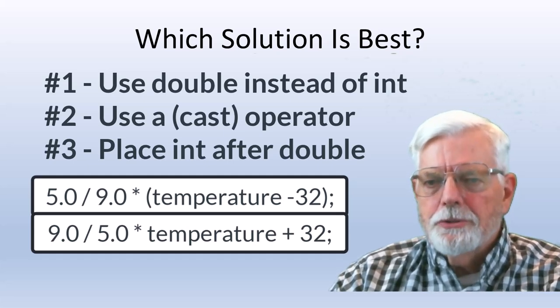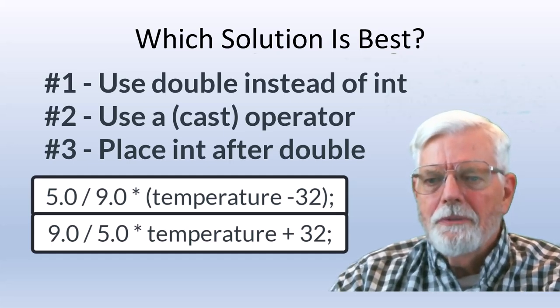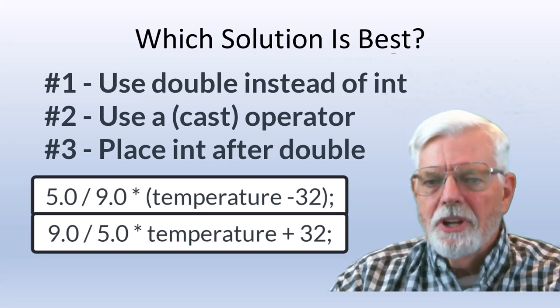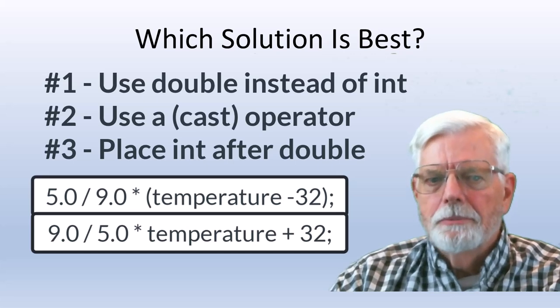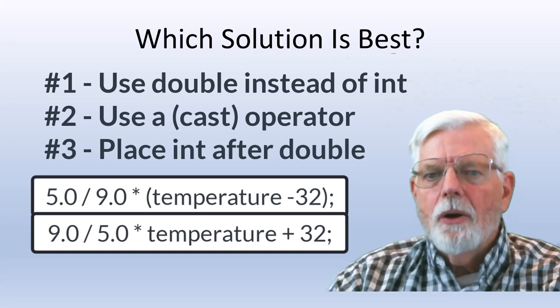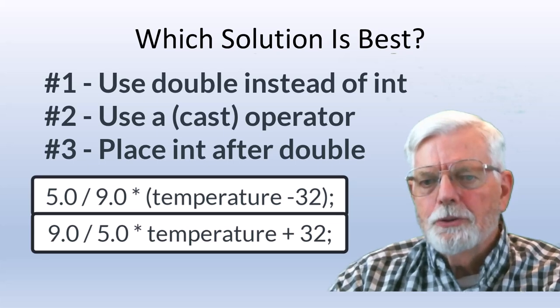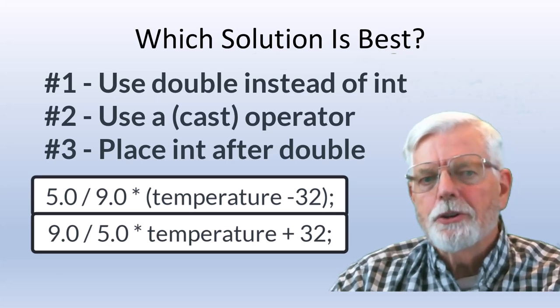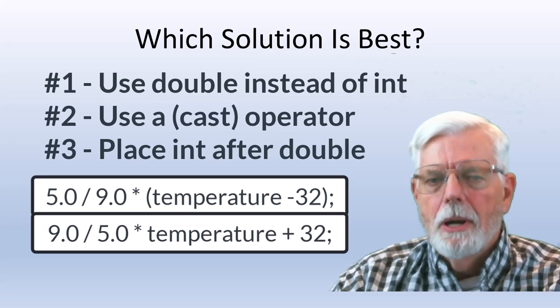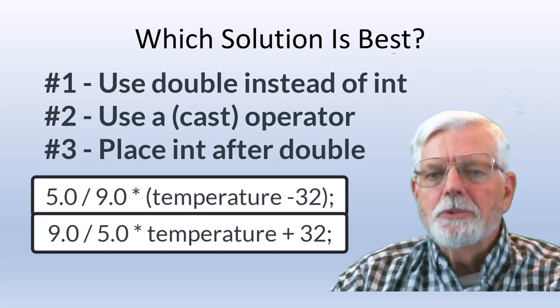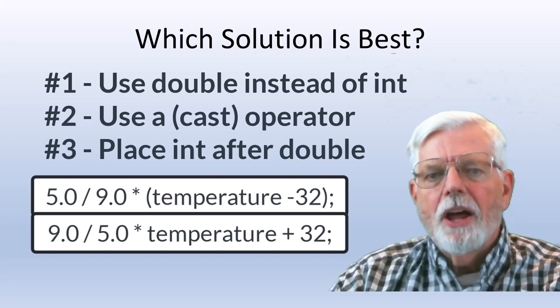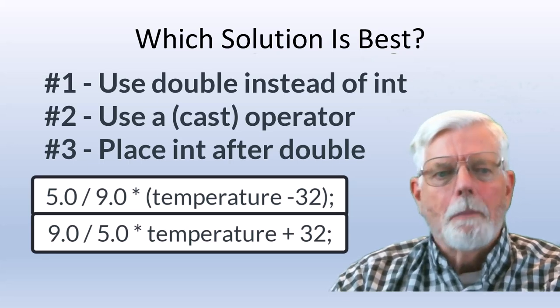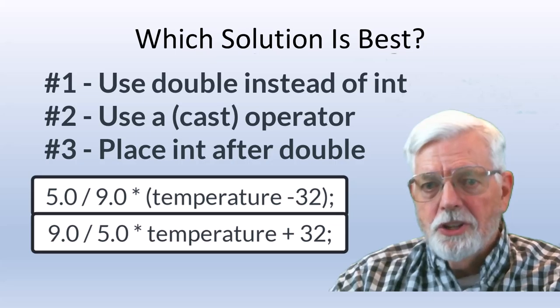Therefore, the first solution, 5.0 divided by 9.0 is the best way to fix the program instead of any other examples. What I really want you to get out of this possible and confusing problem is for you to really understand what happens when you are mixing integer and floating point data types. Because sometimes you may end up with the correct computation and other times the compiler is doing what it is programmed, but not necessarily what you think should happen.